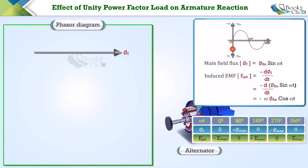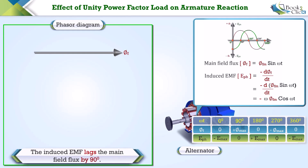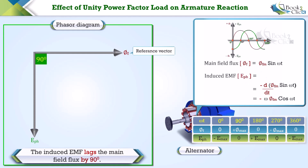Let us plot these values in the XY plane. In the XY plane, the induced EMF crosses the x-axis with a delay of 90 degrees, so it is clear that the induced EMF lags the main field flux by 90 degrees. Let us draw a vertical line from the origin with a lag of 90 degrees from the reference vector phi_f — it represents the induced EMF e_ph.